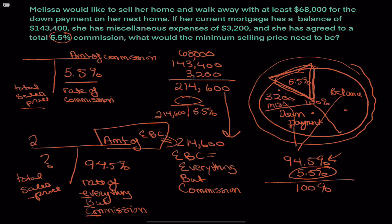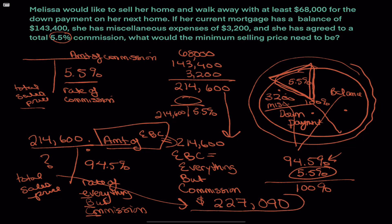We have two out of three numbers in the T-bar, so we divide. We find that our final answer is a sales price of $227,090. If Melissa is going to cover all of her expenses, this house needs to sell for $227,090. I hope this helps, and if you have any questions or need me to do a problem, just ask.